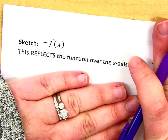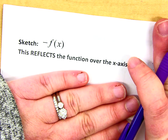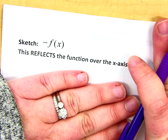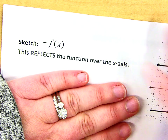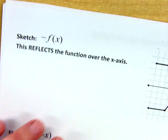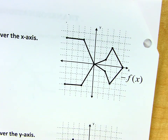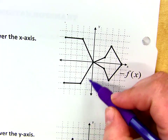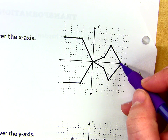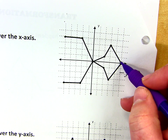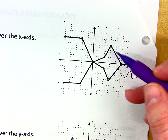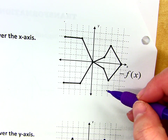What happens when you put a negative out in front of the whole thing? It flips it right over that x-axis. We have the original as it was, but if we put a negative out in front of the whole thing, it just flips it right on over.